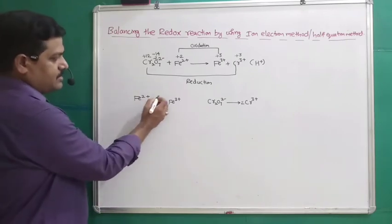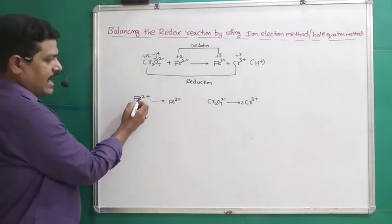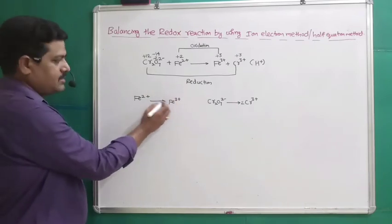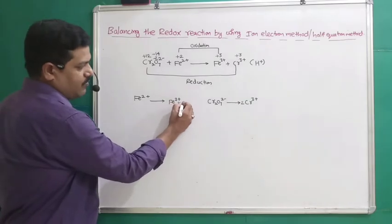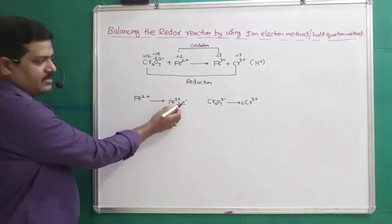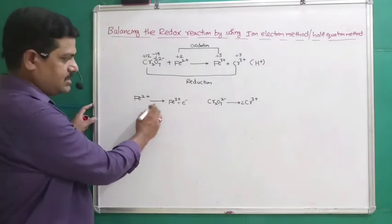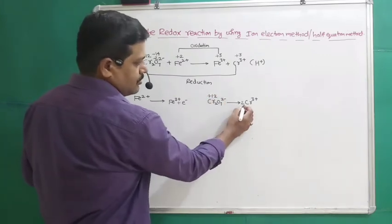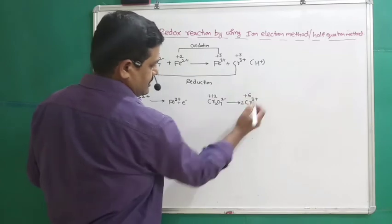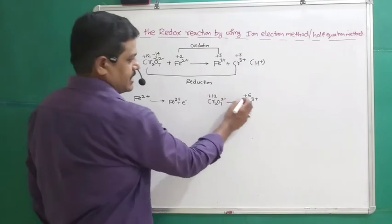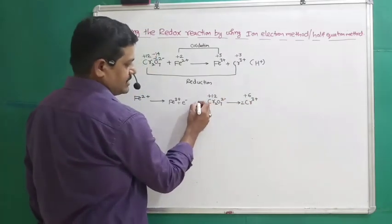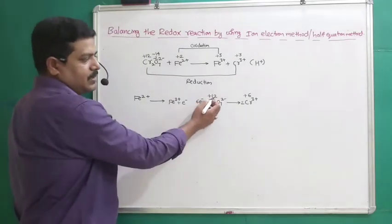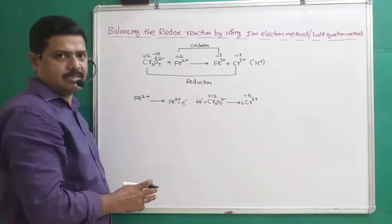Next, we balance the oxidation numbers by adding suitable electrons. For the iron half-reaction, Fe²⁺ → Fe³⁺, we add 1 electron to the product side. For the chromium half-reaction, 2 chromiums have oxidation state +12 on the reactant side and +6 on the product side, so we add 6 electrons to the reactant side. Thus: +12 − 6 = +6, and the oxidation states on both sides are balanced.